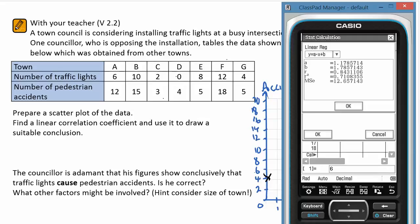Now, the council is adamant that his figures conclusively show that traffic lights cause pedestrian accidents. Is he correct? Now, if we consider the size of the town,